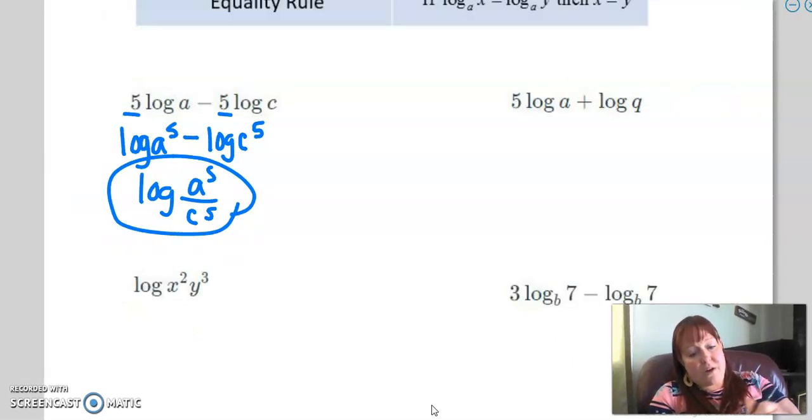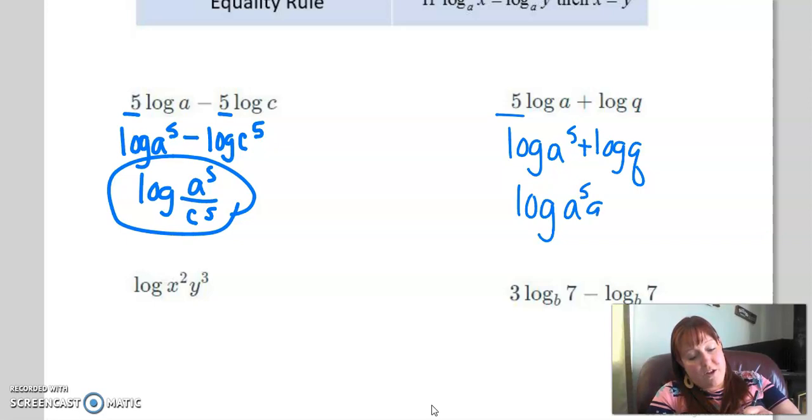All right, this one, again, I see this five out front, which makes me believe it's going to be an exponent. So I have a to the fifth plus log of q. Now this is adding, so this tells me it's a product. So now I have log of a to the fifth q all inside the log.